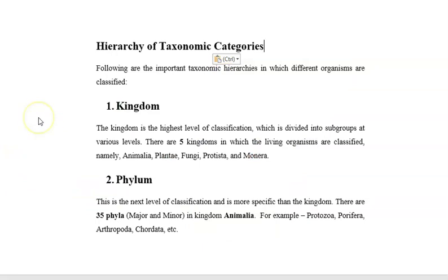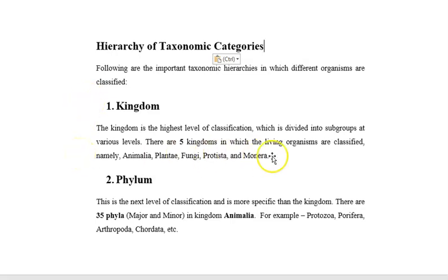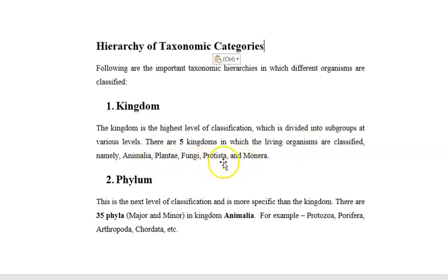Now, there are seven main categories. Number one is kingdom. Kingdom is the highest level of classification, which is divided into subgroups at various levels. There are about five kingdoms in which all living organisms are classified, namely Animalia, Plantae, Fungi, Protista, and Monera.